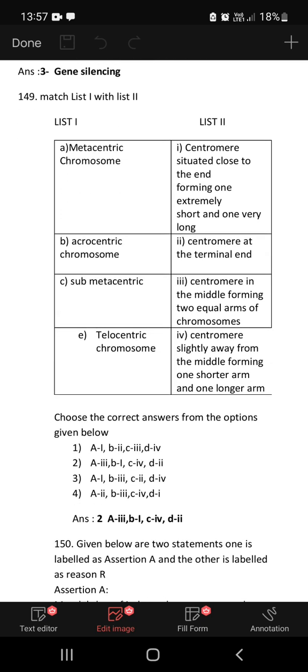Then match the following. We have the cell biology question. Metacentric chromosome has centromere in the middle forming two equal arms, so A is 3. B is 1, acrocentric chromosome, one extremely short and one very long. Sub-metacentric has centromere slightly away from middle. Telocentric chromosome has centromere at the terminal end. So the right answer is A3, B1, C4, D2.